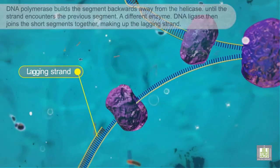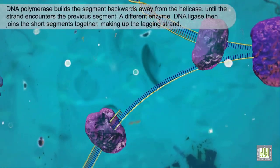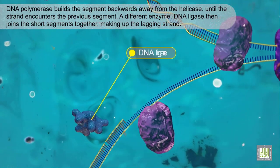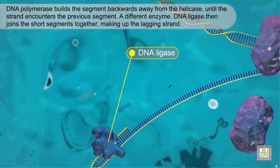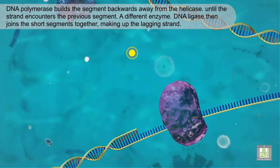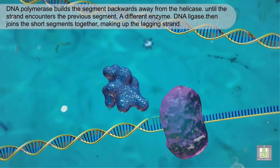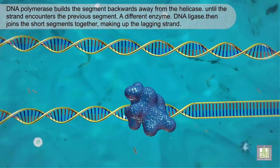DNA polymerase builds the segment backwards away from the helicase until the strand encounters the previous segment. A different enzyme, DNA ligase, then joins the short segments together, making up the lagging strand.